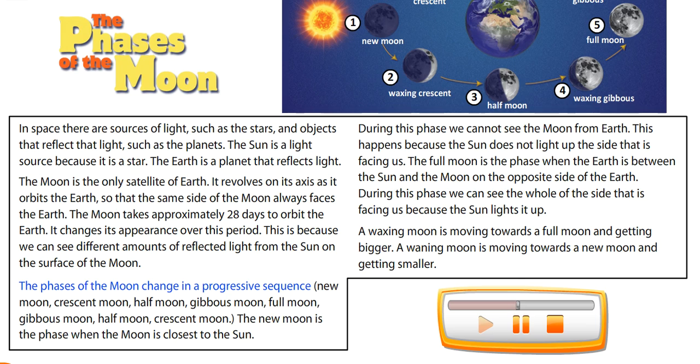The phases of the Moon change in a progressive sequence: New Moon, Crescent Moon, Half Moon, Gibbous Moon, Full Moon, Gibbous Moon, Half Moon, Crescent Moon.